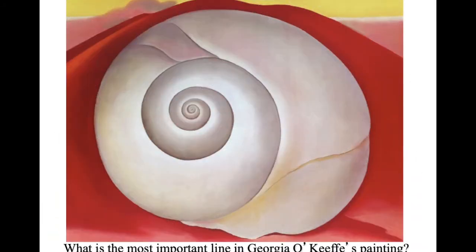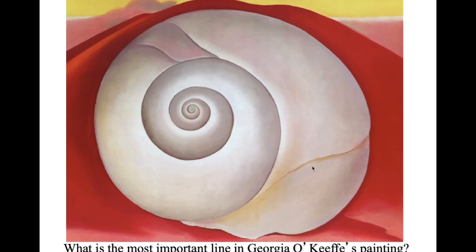We'll go back to Georgia O'Keeffe's painting. Can you name the most important line in this painting? If you look, it's this one that spins and gets smaller and smaller. What do you call a line like that? I would call it a curve, but do you know the name of this curve that spins until it gets smaller — or starts in the middle and gets larger? That is called a spiral. And what kind of shape did Georgia O'Keeffe use? It's a seashell — it's from nature. So this would be a good example of an organic shape because it's not perfectly geometric.